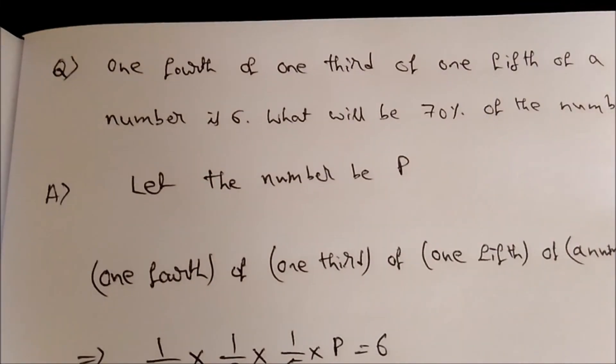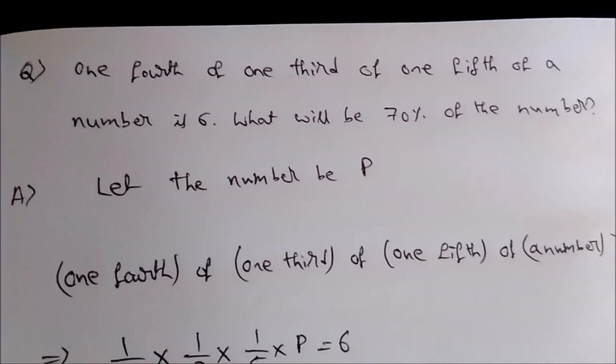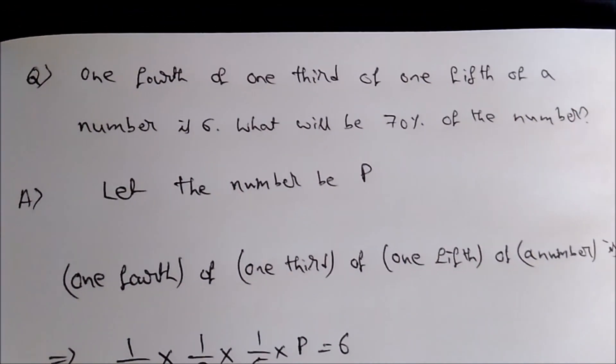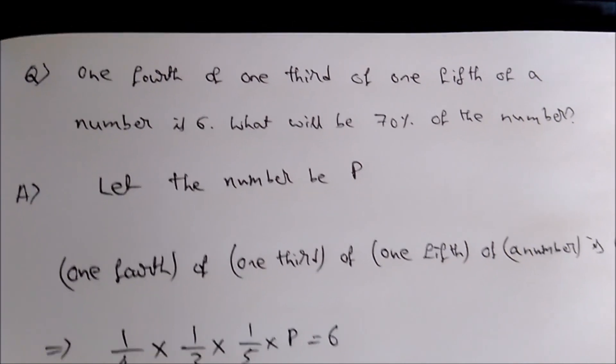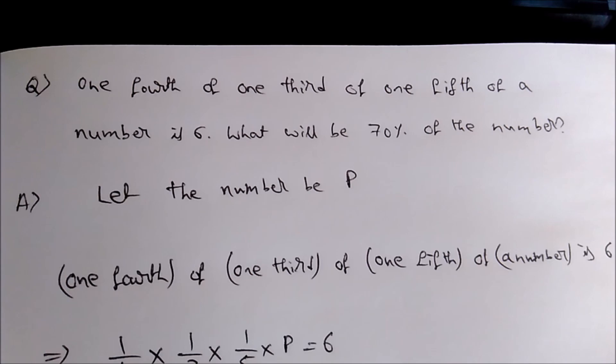Friends, today I have taken a problem from the topic of percentages. The question is: one-fourth of one-third of one-fifth of a number is 6. What will be 70% of the number?